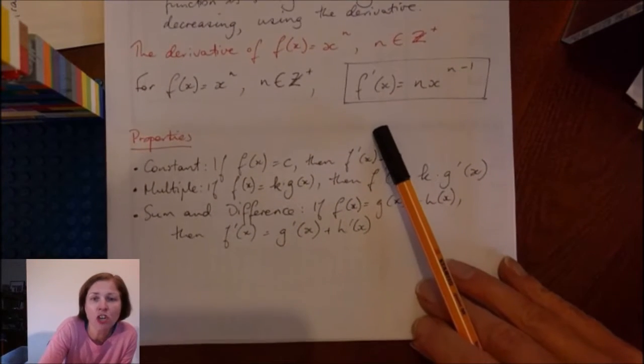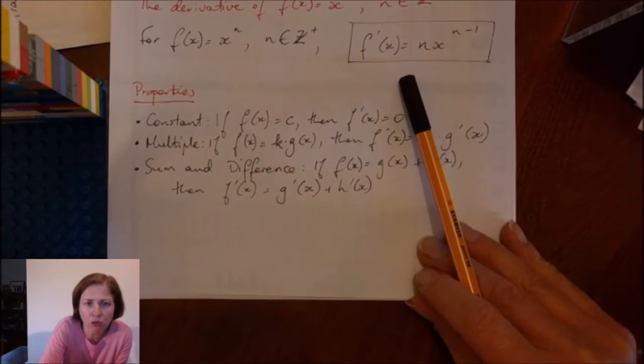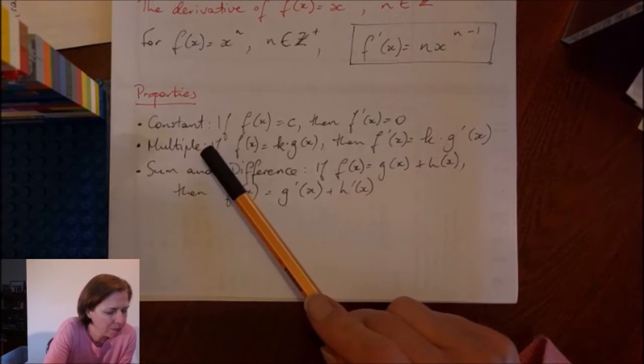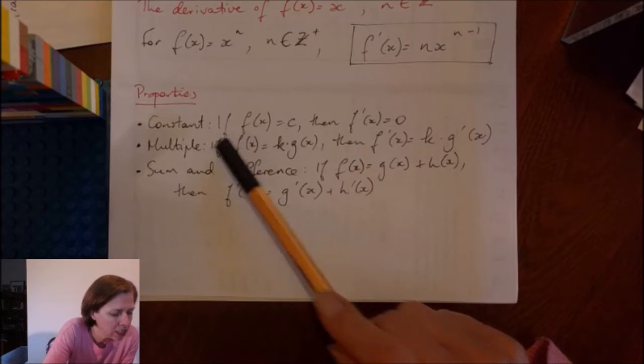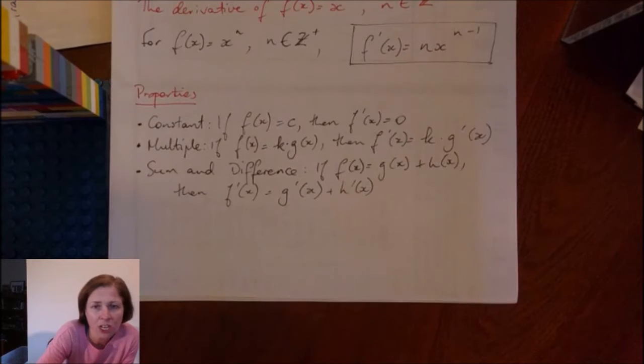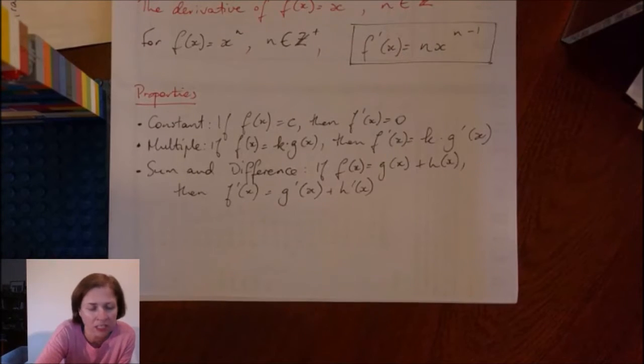All right, a couple of properties. Now, I know you've done that last year. It's not new, but you'll need more practice on it. These are some properties. Firstly, if I am deriving a constant f(x) = c, where c is some constant, then f'(x) = 0. For example, f(x) = 6, f'(x) = 0.